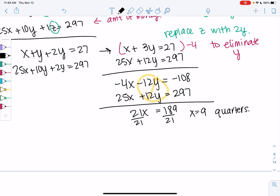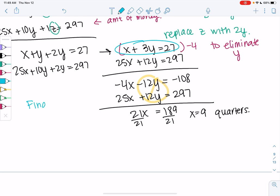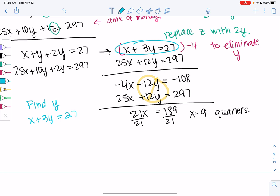And we can just back sub to find Y and Z. I'll use the slightly more simplified one. X plus 3Y is 27. So 9 plus 3Y is 27. Go ahead and solve for Y. I get 3Y is 18, and then divide and I get 6. So 6 dimes.